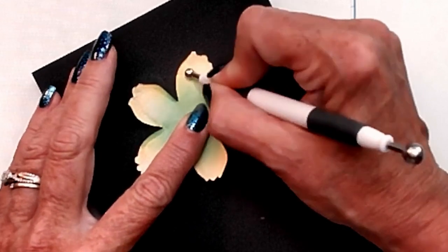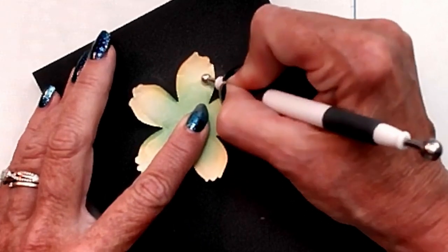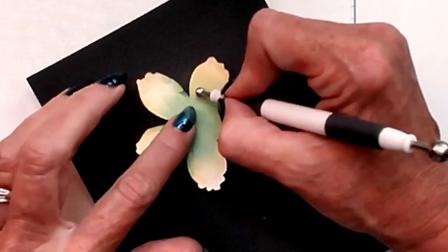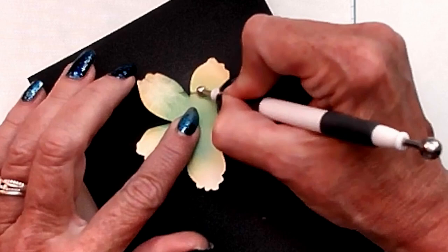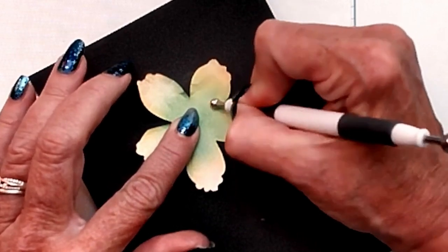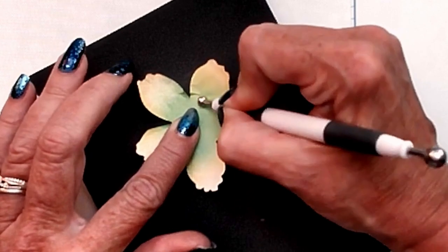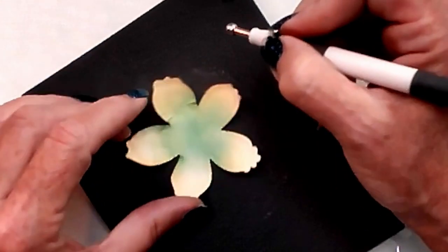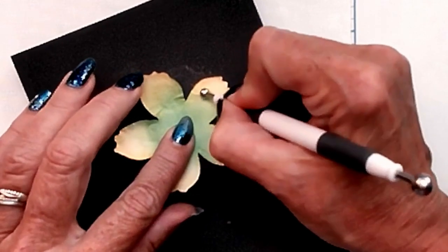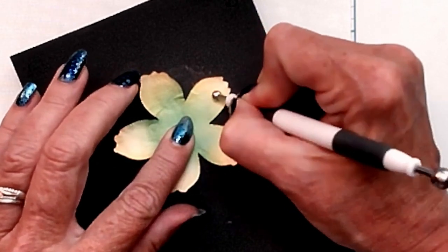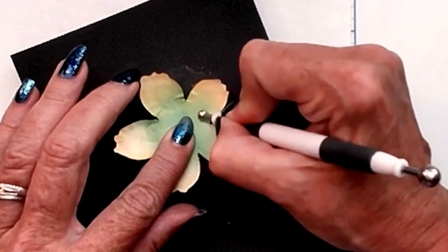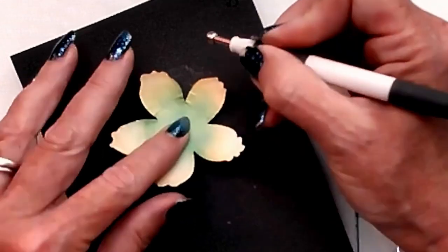You're going to take your medium-sized ball and make those tiny circles. As she's doing that, she's applying pressure to the flower. What will happen is it'll start to lift a little bit more. Crinkles are fine. Those little crinkles give the flower more dimension. It gives it more of a realistic look.